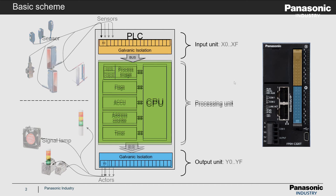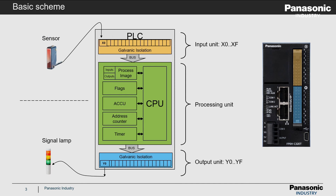In this slide let's make an example to show the cyclic workflow of a PLC program. A signal of a sensor which is connected to physical input X0 shall be used to control the output Y0 of the PLC to activate a signal lamp.